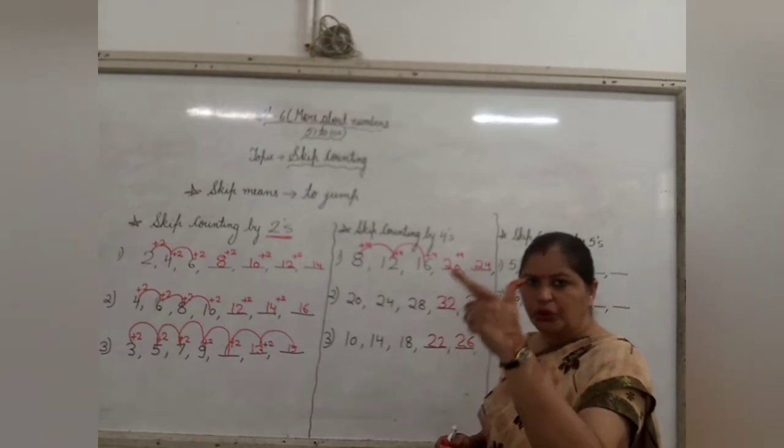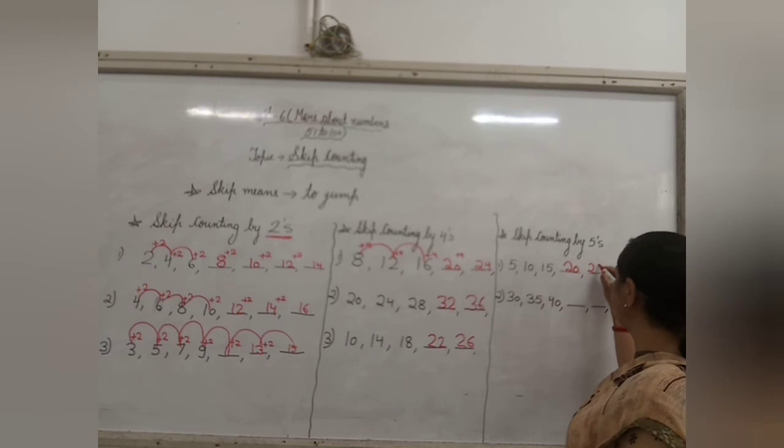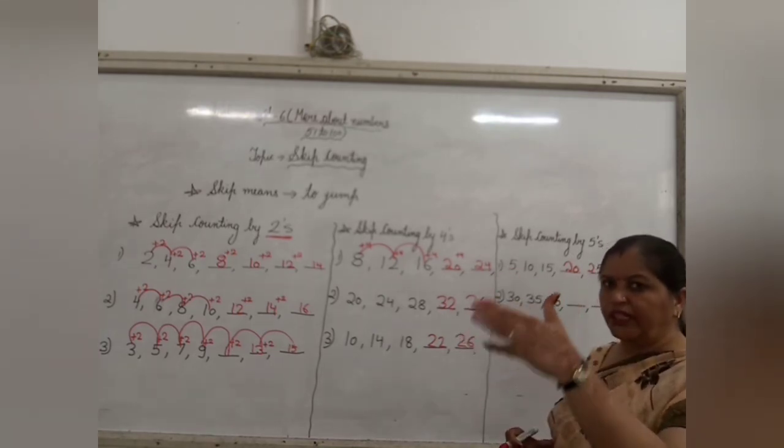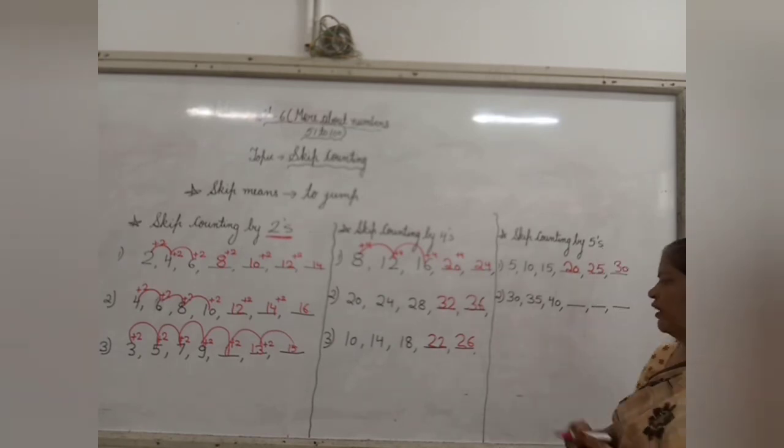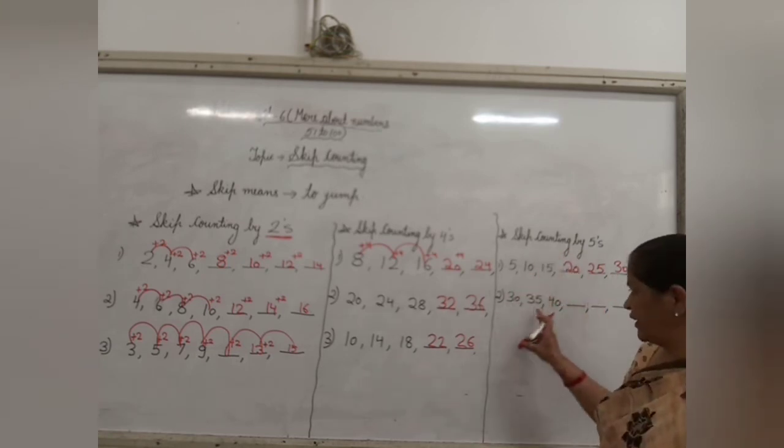Then 21, 22, 23, 24, 25. 25 will come. Then 26, 27, 28, 29, 30. 30 will come. 30 is given. 31, 32, 33, 34, 35. 35 is written.